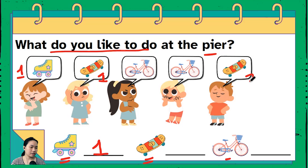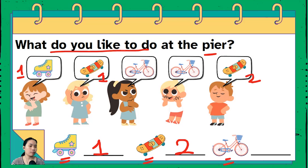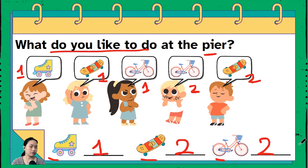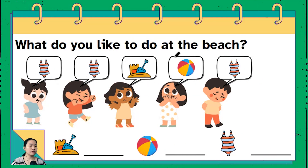Next up is skateboard — how many skateboards do you see in the speech bubbles? One, two — so there are two people that like skateboard. Last, bicycle — how many kids like to ride a bicycle at the pier? One, two — there are two people who like to do bicycle. So: one person likes roller skate, two persons like skateboard, and two would like to ride a bicycle.